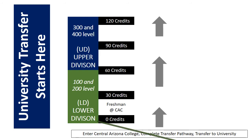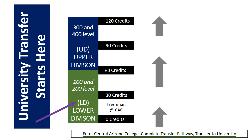University transfer starts here. You will enter CAC, complete a transfer pathway, and transfer to the university as a junior. You begin as a freshman with zero credits, completing lower division courses in your selected transfer pathway. Lower division signifies 100 and 200 level classes — for example, English 101.